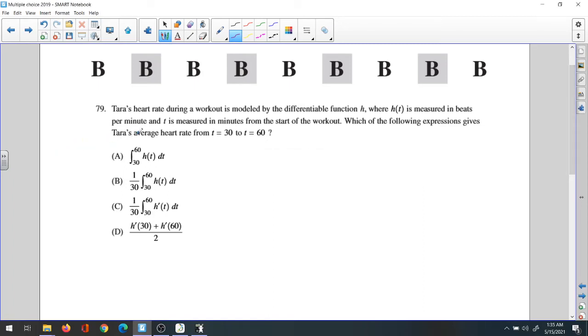Question 79. Tara's heart rate during a workout is modeled by the function H, where H(T) is measured in beats per minute and T is measured in minutes from the start of the workout. Which of the following expressions gives Tara's average heart rate from T equals 30 to T equals 60?